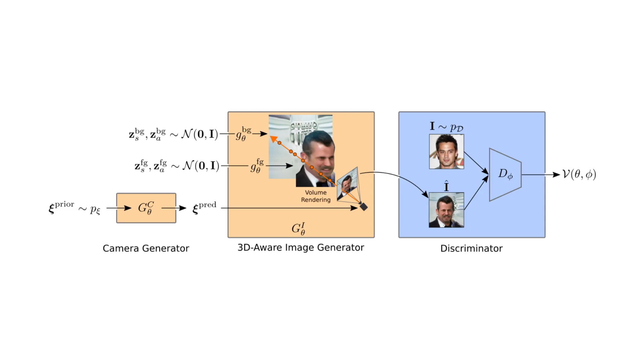That means that we learn 3D representations, despite training our model from raw image collections only, without any annotation. Let's have a look how well this works.